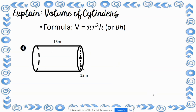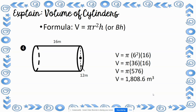Now try number 4 and put your answer in the chat. For number 4, you should get 1,808.6 meters cubed. The measurement shown goes all the way across, so the diameter is 12, making the radius 6. The height is 16. So 6 squared is 36; 36 times 16 is 576; 576 times 3.14 gives 1,808.6 meters cubed.